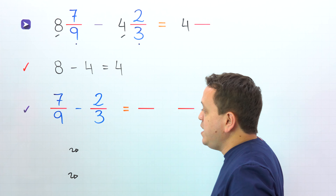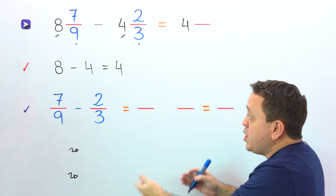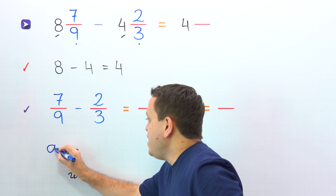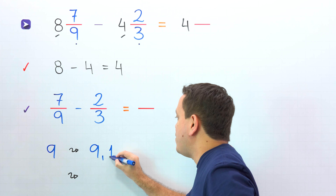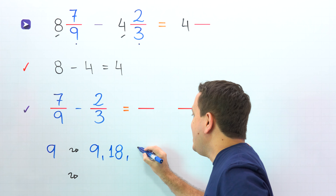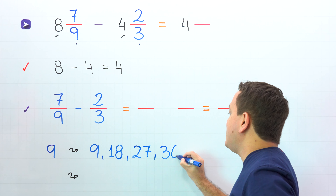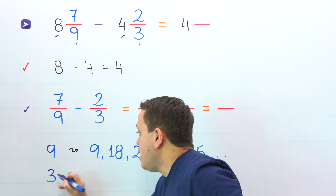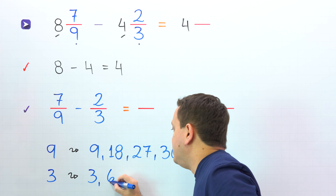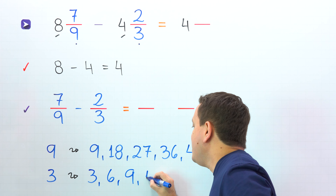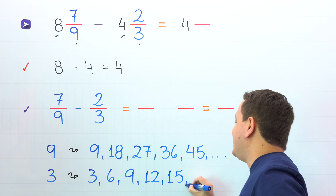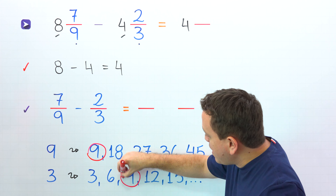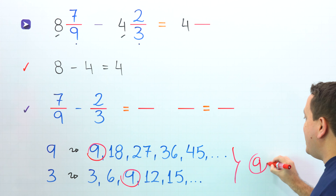It's time to subtract the fractions. The fractions are 7 ninths and 2 thirds. In the same order, we put 7 ninths minus 2 thirds. These two fractions have different denominators: 9 on the left, 3 on the right. To find the difference, we need the least common denominator. The first multiples of 9 are 9, 18, 27, 36, 45, and so on. The first multiples of 3 are 3, 6, 9, 12, 15, and so on. The smallest number on both lists is 9, so 9 is the least common denominator.